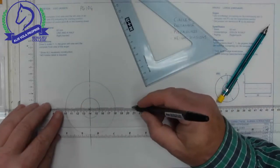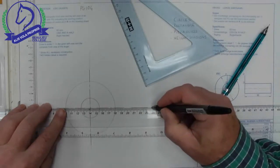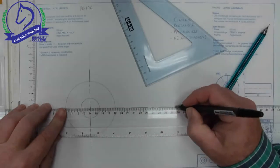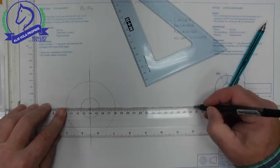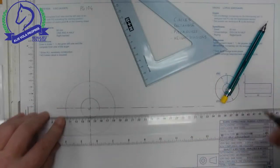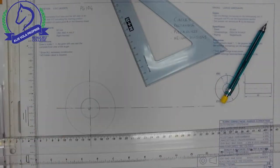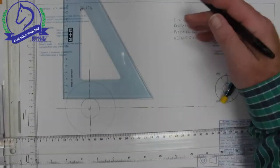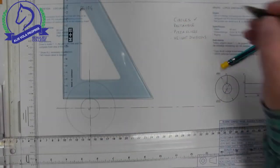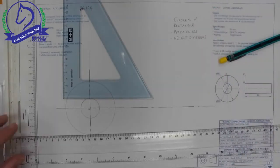And I'm also going to carry on with that center line for my other view going across there. As far as my process, I've now done my circles. Now I want to do my rectangle.